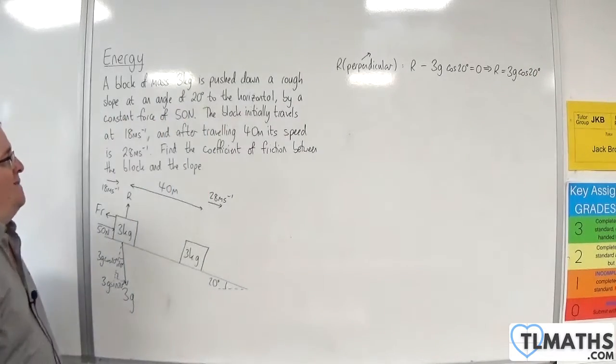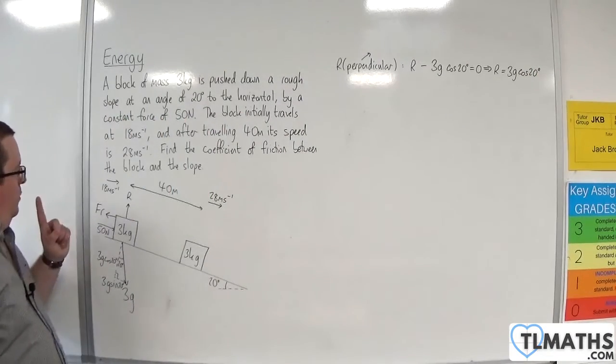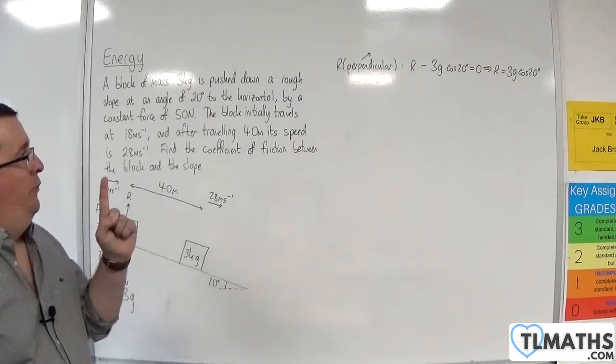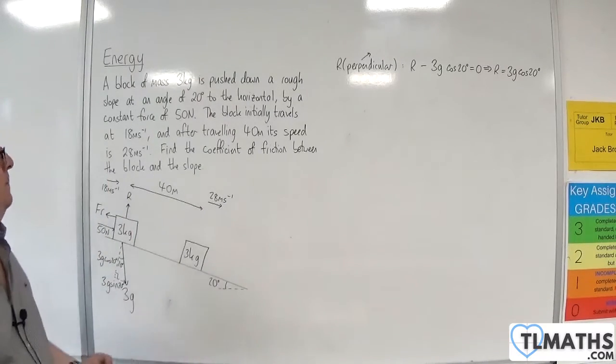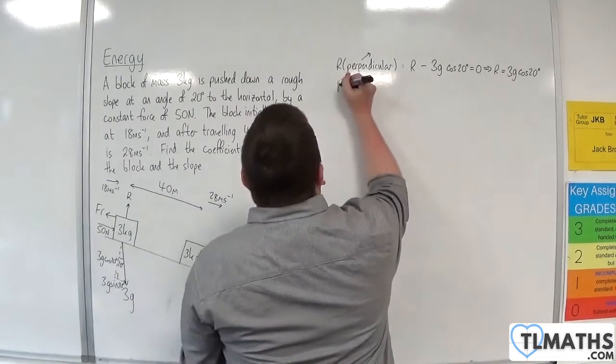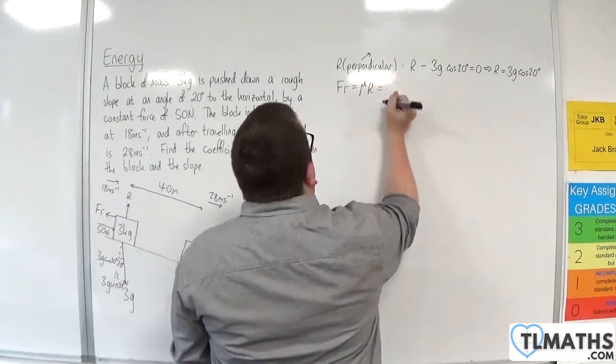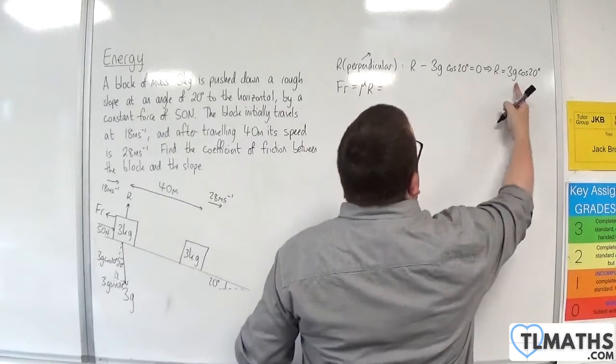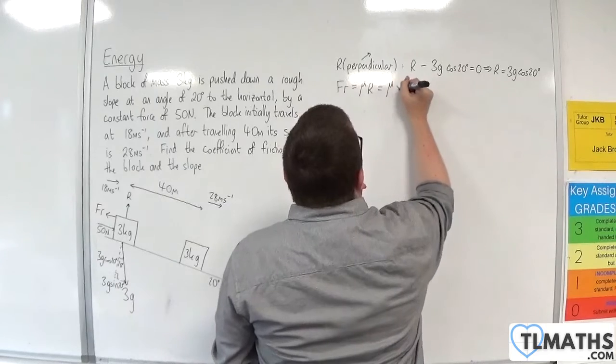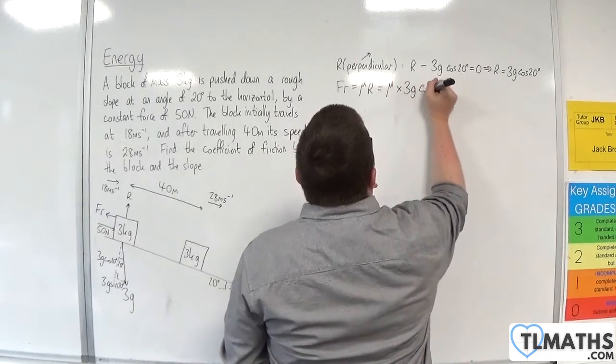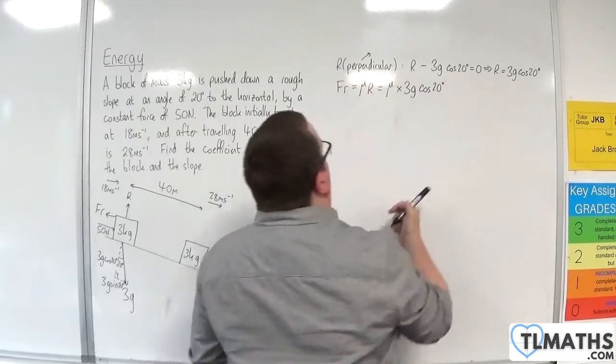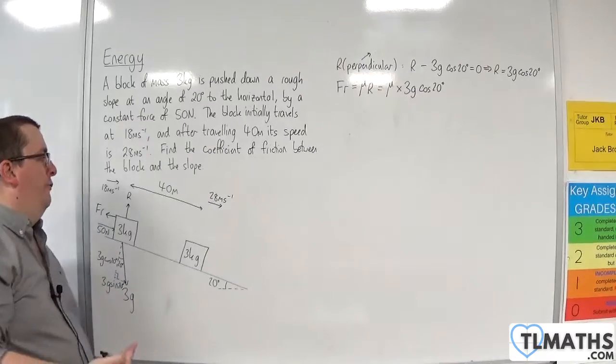Now the friction is going to be equal to mu times R, because it's moving. So mu times R, and so that is mu times this, so 3G cosine 20. And it is the mu, the coefficient of friction that I want to find.